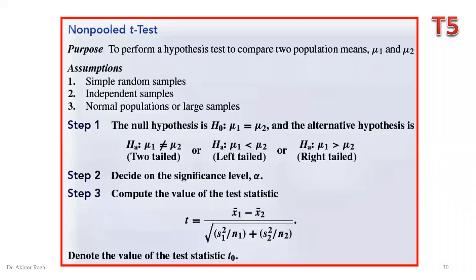Non-pool t-test. This test is also used for comparison of two population means, as the pool t-test did. The non-pool t-test has one specific assumption: population standard deviations are not the same for the two groups, so sigma 1 is not equal to sigma 2. If the two standard deviations are not the same, the non-pool t-test will be used.